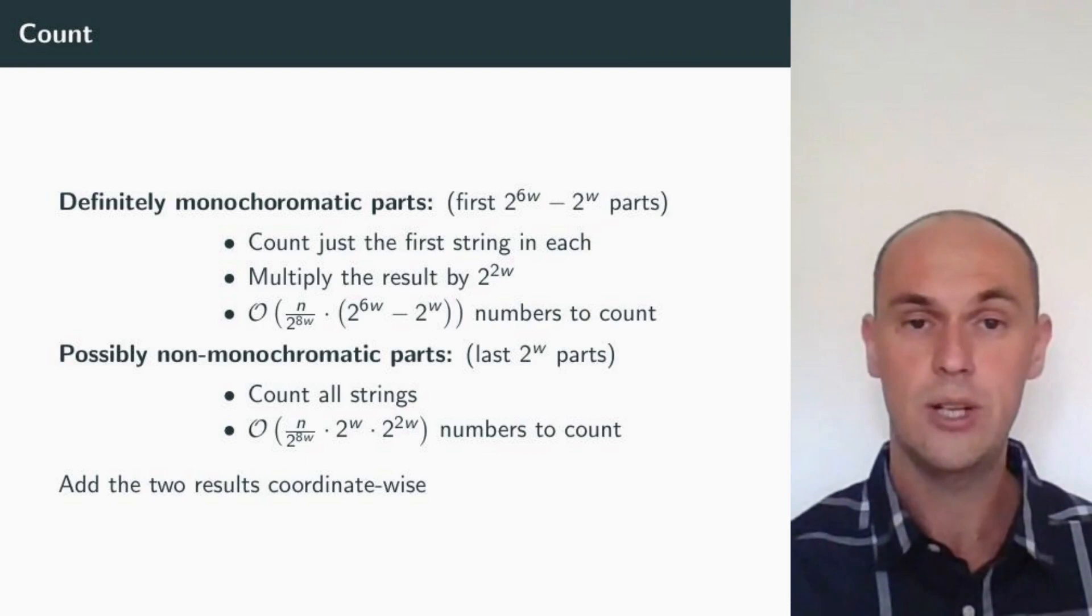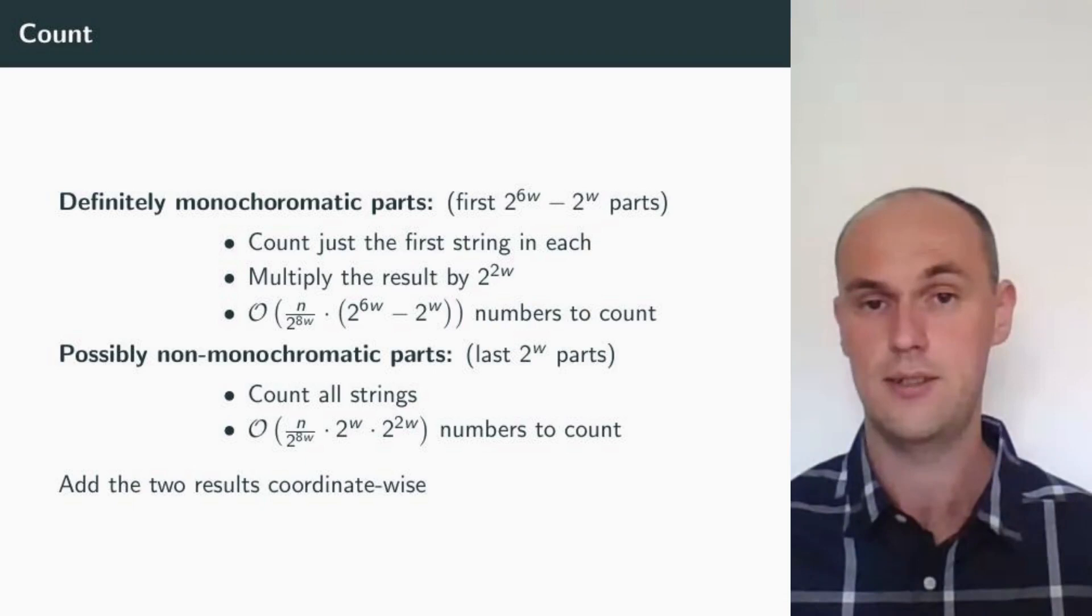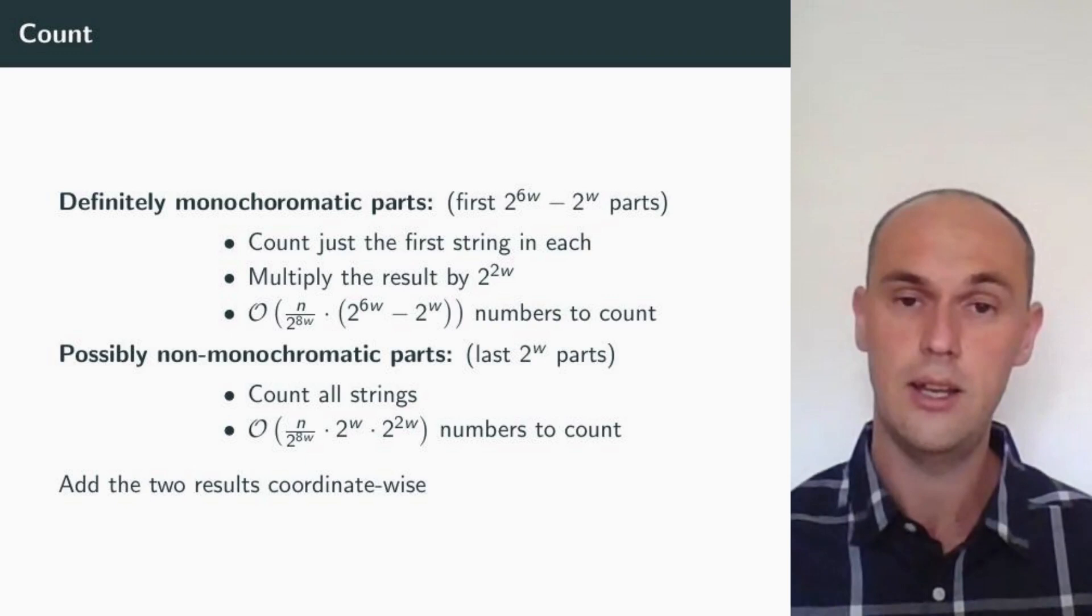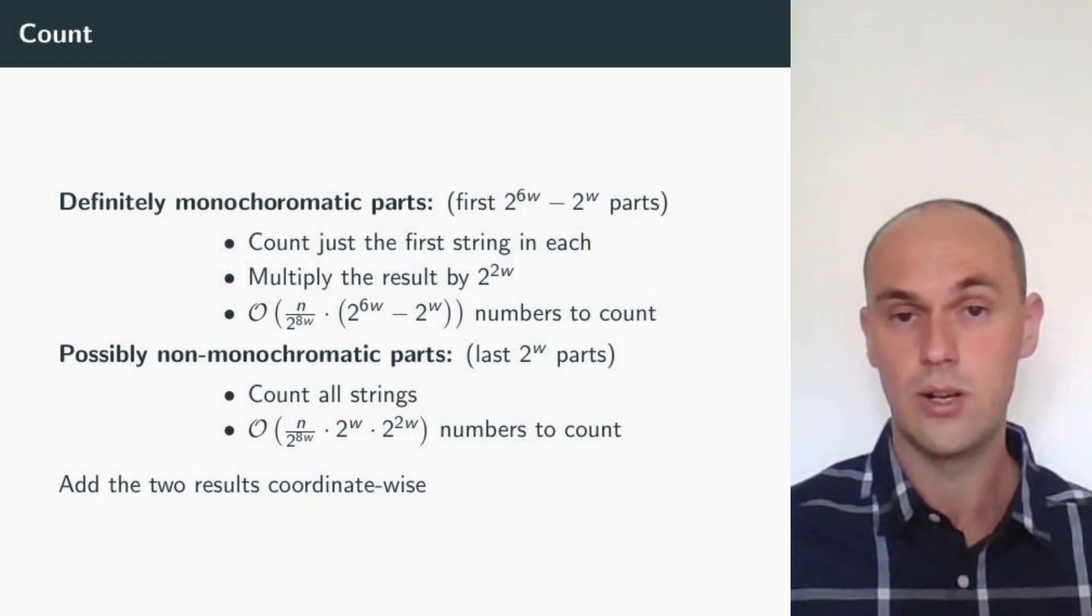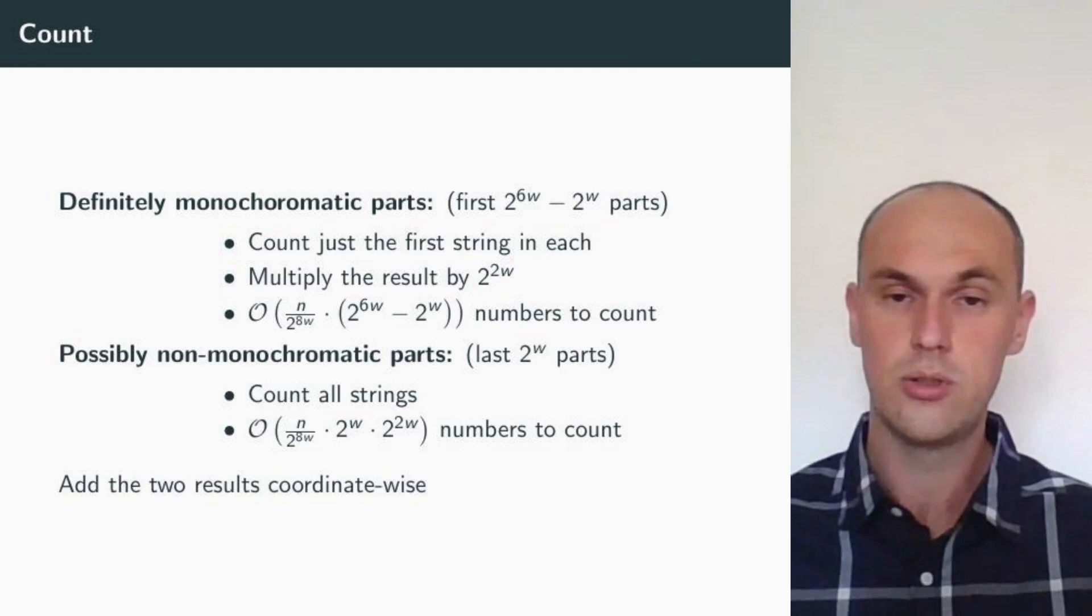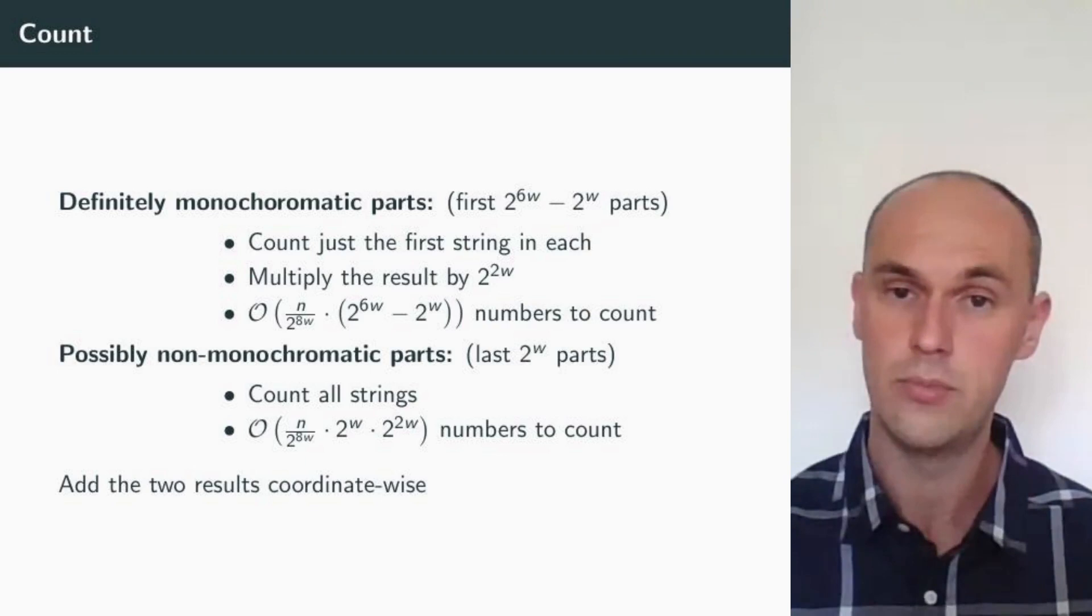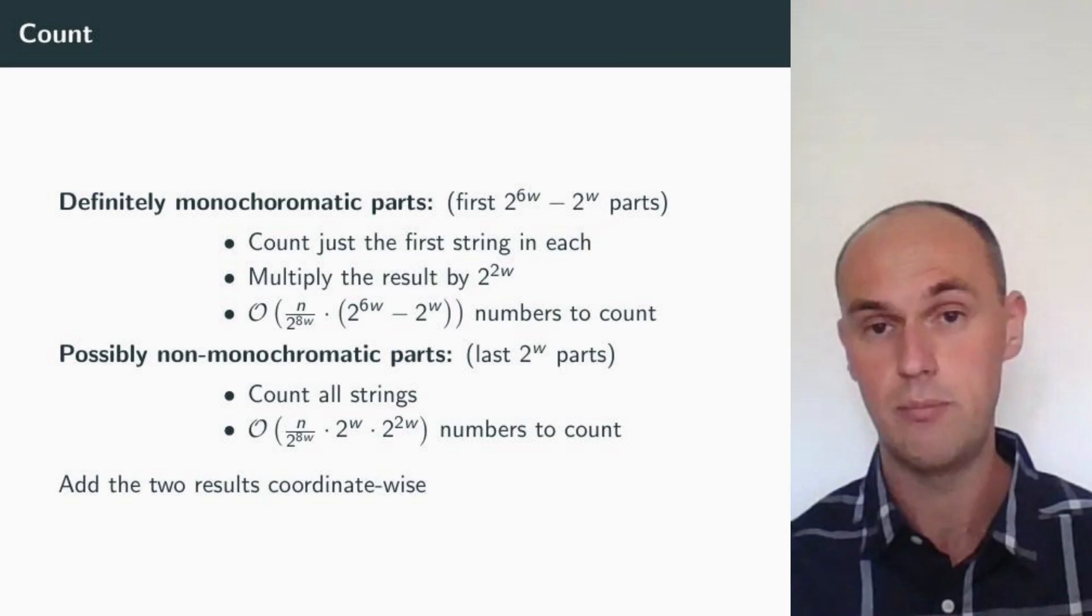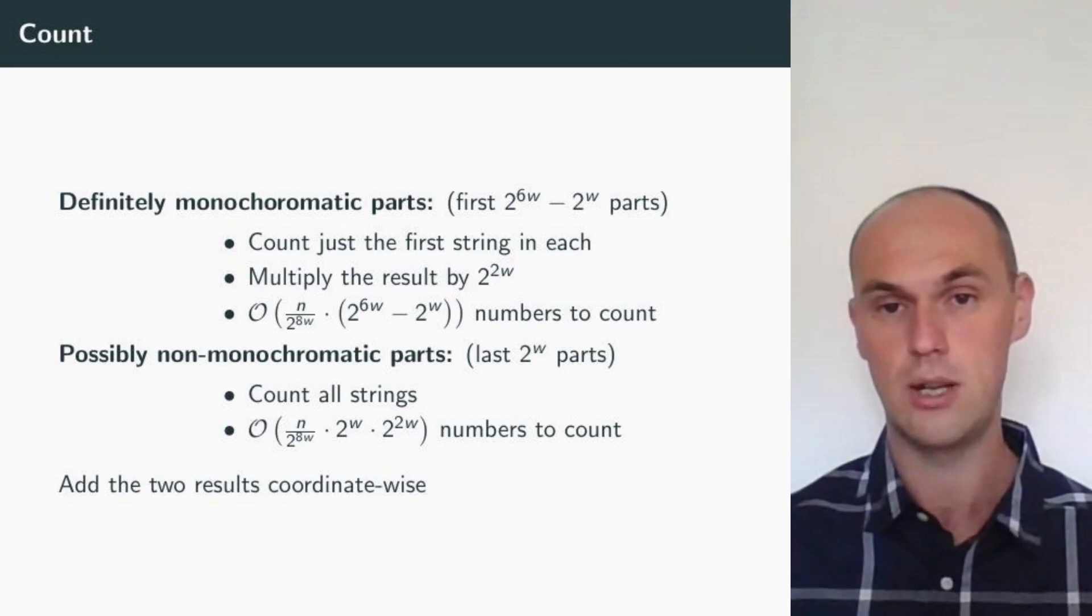We do this shift by sorting by a single bit, which tells us whether the part is non-monochromatic or not. Thus, in the beginning, the first 2 to the 6w minus 2 to the w parts have to be monochromatic. And the rest are possibly non-monochromatic. Now we count. For the definitely monochromatic parts, we know we can count just the first string in each part and multiply the result by 2 to the 2w, the number of inputs in each part. Thus, we have n over 2 to the 8w, that's the number of blocks, times 2 to the 6w minus 2 to the w, that's the number of definitely monochromatic parts in each block, numbers to count.